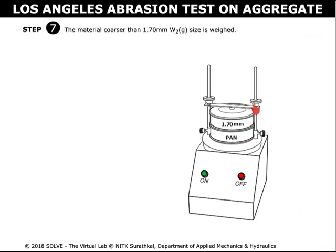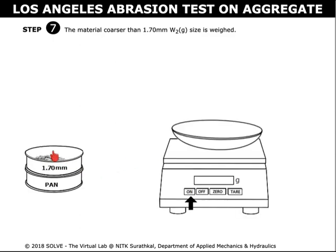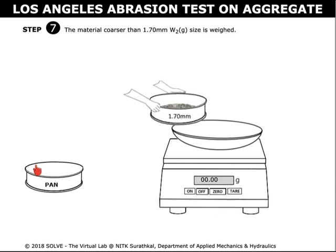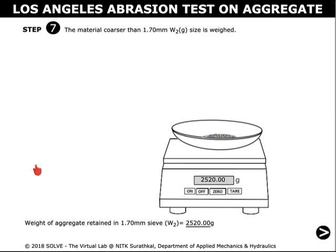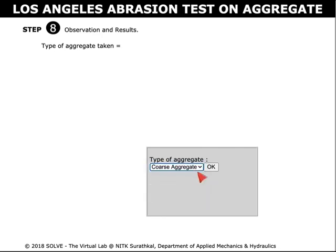Remove the sieve from the mechanical shaker. Open the lid. Switch on the weighing machine and click on the tare to clear the weight. Click on the 1.7 mm sieve to transfer the coarse aggregates into the container and note down the weight. Click on the correct answer to proceed to the next step.